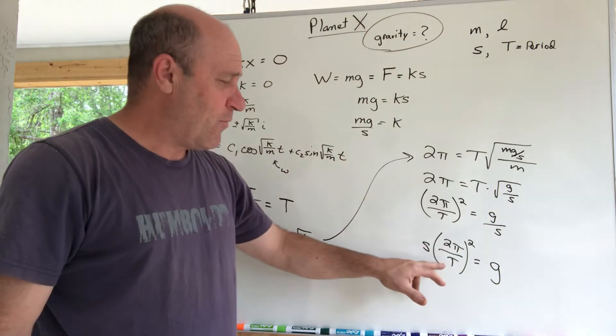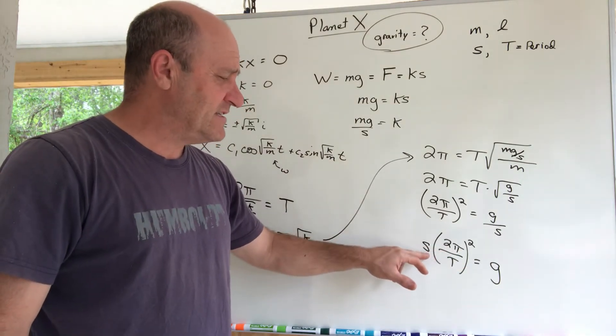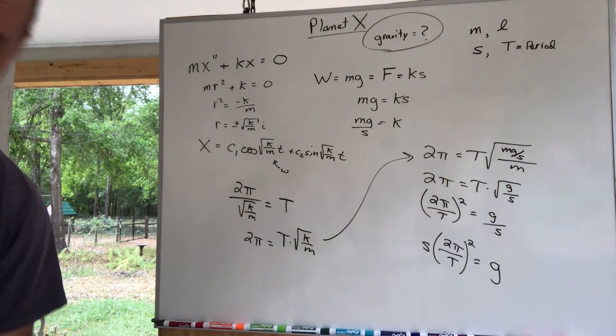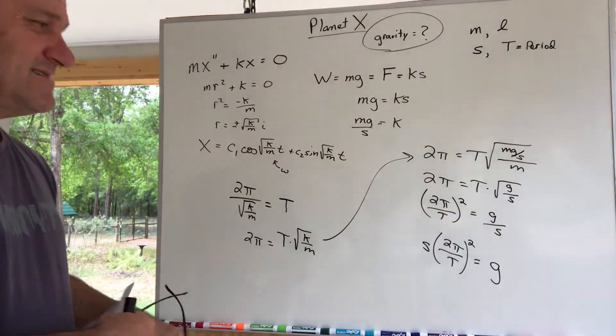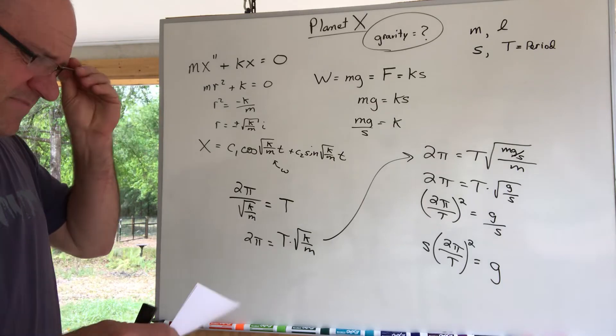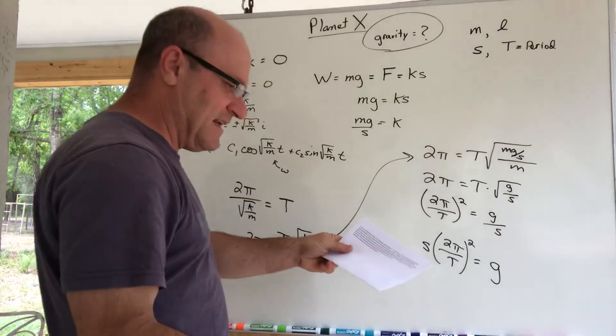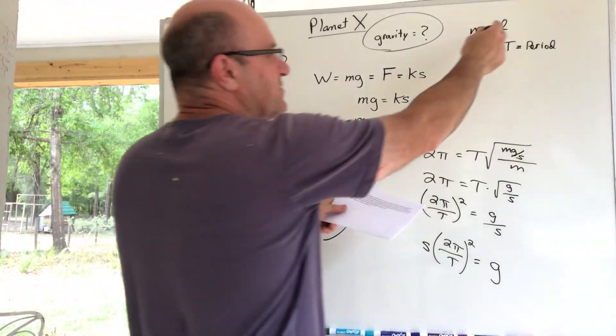I think the gravity is S multiplied by (2π/T)². Look, it turns out I don't even need the mass. I don't need the mass, I don't need K. Well, I kind of needed it, but here I am. What I need is the period and the distance it was stretched.